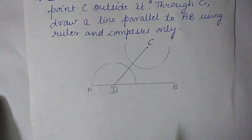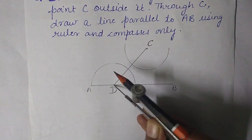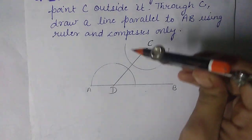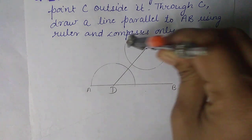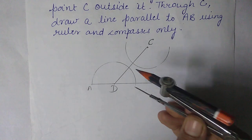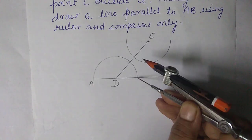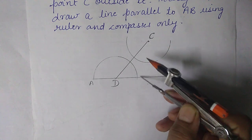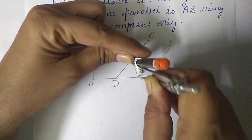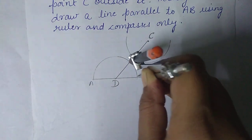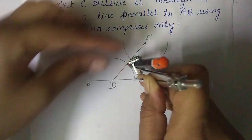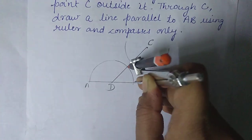With the same radius, you have to draw a semicircle on point C also. Without disturbing the compass, draw the semicircle having the same radius. So here I am drawing the semicircle at C with the same length of compass as used at D.